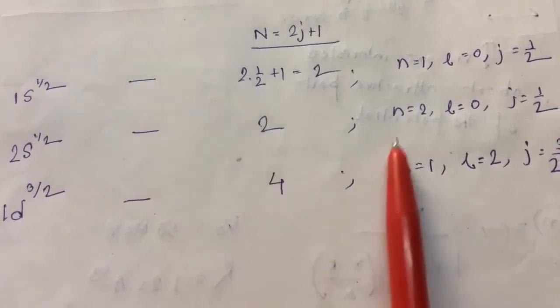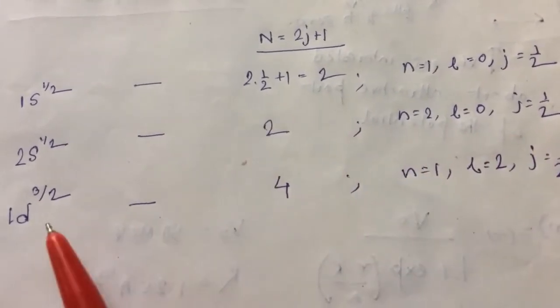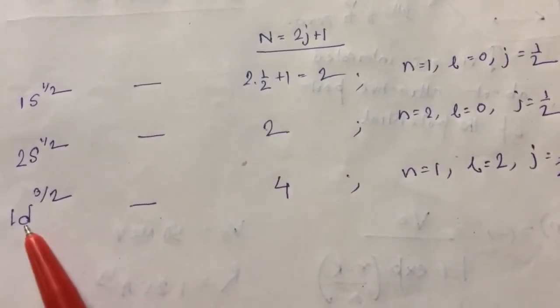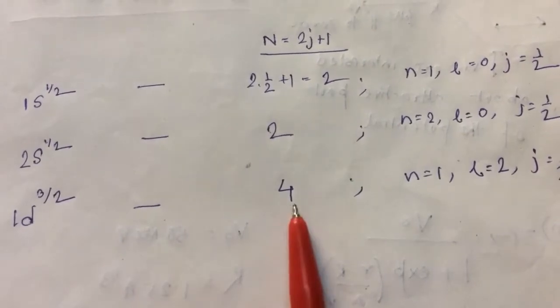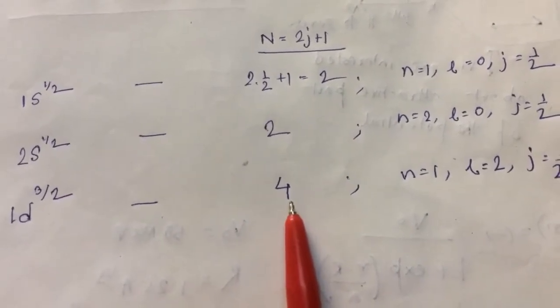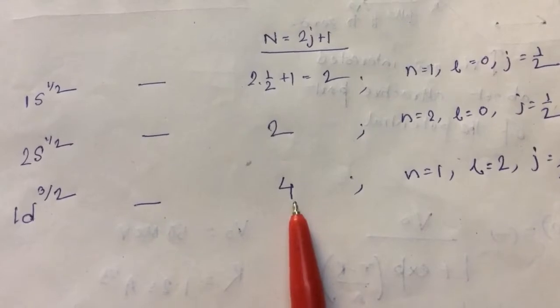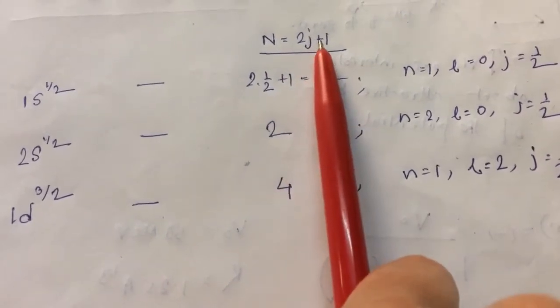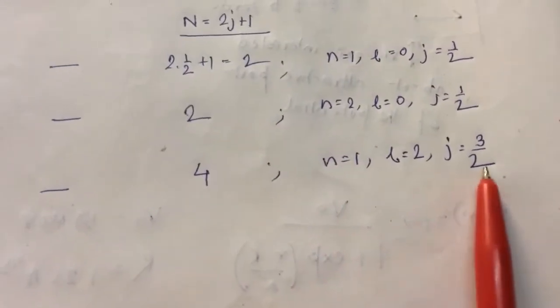So it is 2, and this is the configuration of the state. Similarly, for 1D3/2, the number of particles, that is the number of either neutrons or protons, is 4.